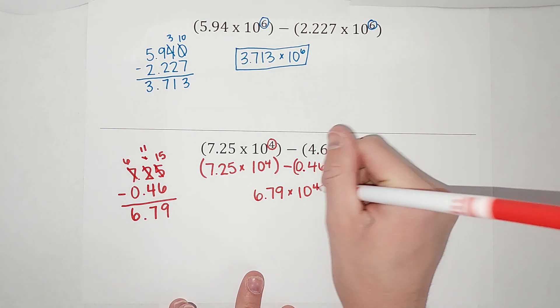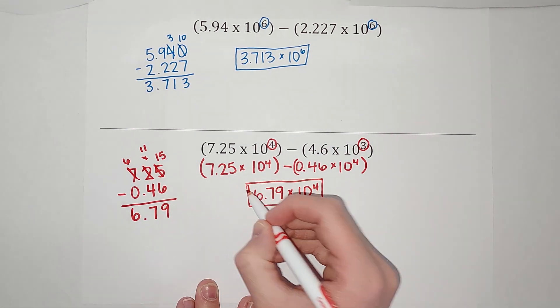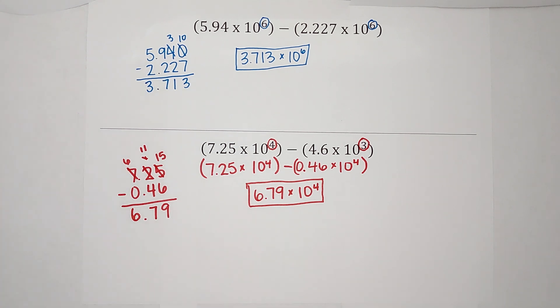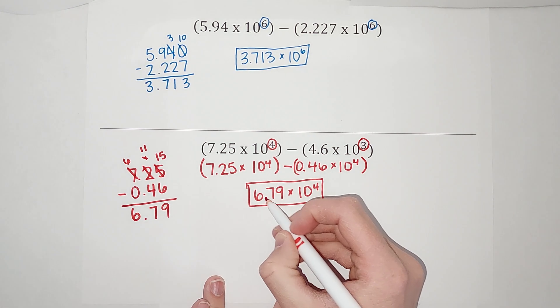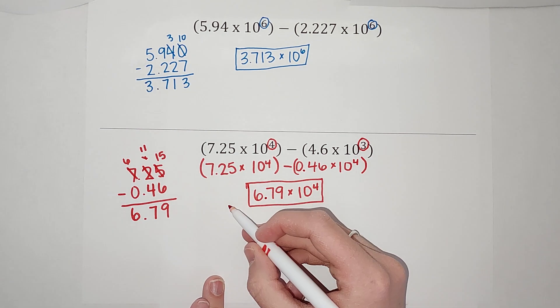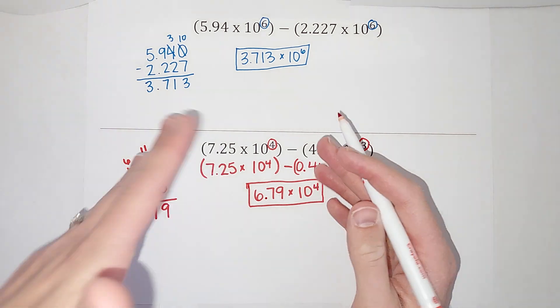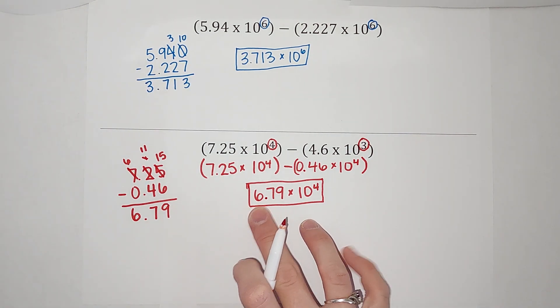The one thing you do need to watch out for when you do this is sometimes you'll get your answer and the decimal might not be where it should be. So if it's not, remember for scientific notation, we always want one number in front of our decimal, right? So if you got an answer and there was more than one number out there or less than one number, if it was a zero there, just make sure you convert again like we did here so that there's one number in front of that decimal.